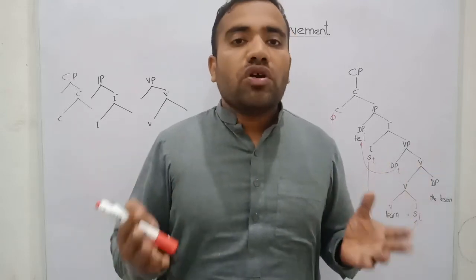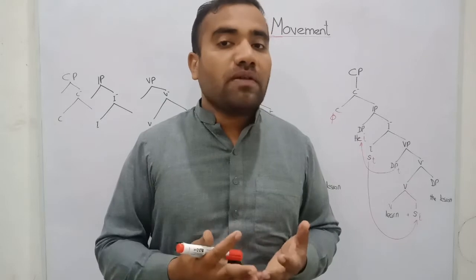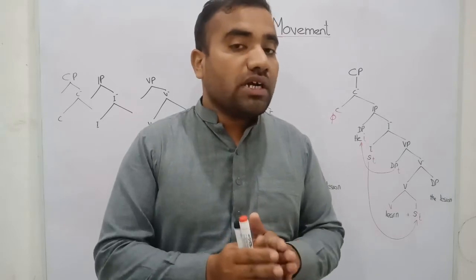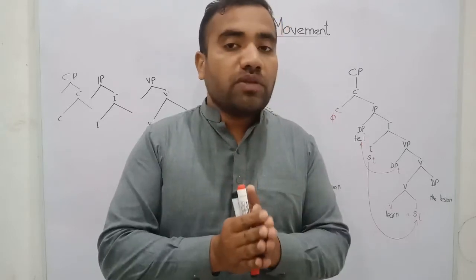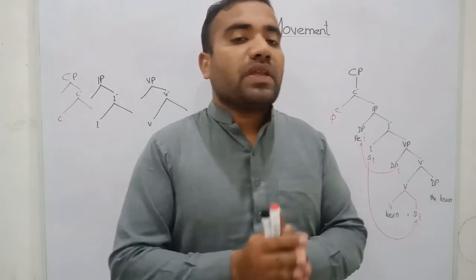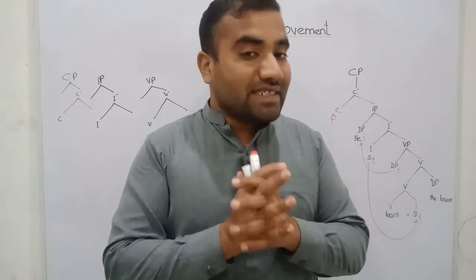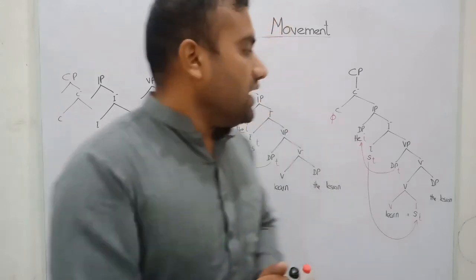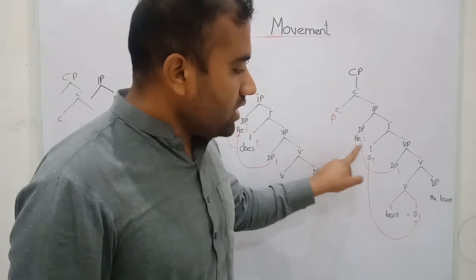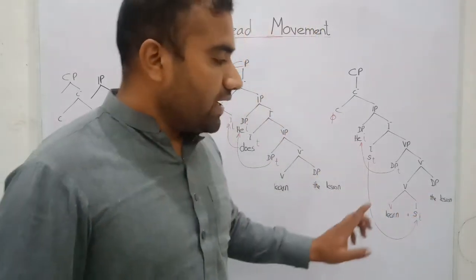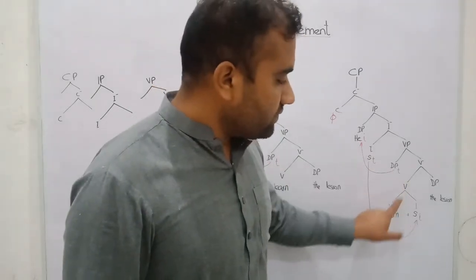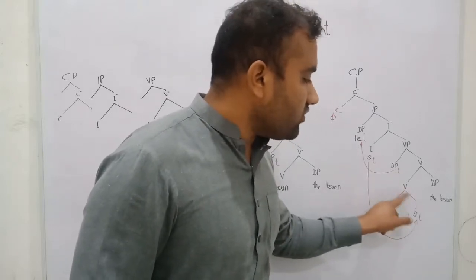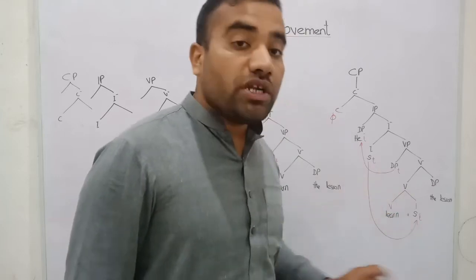In these two examples, we want to show how the head moves — whether the head is moving to a lower level or toward the upper level. We have two sentences. The first sentence is a declarative sentence: 'he learns the lesson.' In this sentence, we have the verb, and for your convenience I have drawn this diagram, which specifically shows how the head movement is operating.